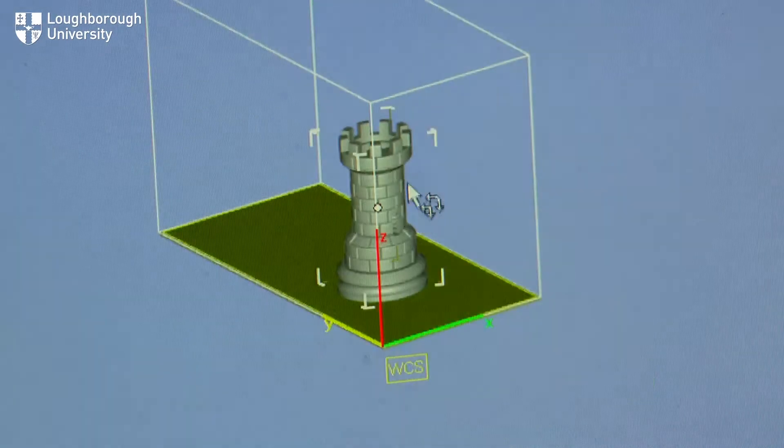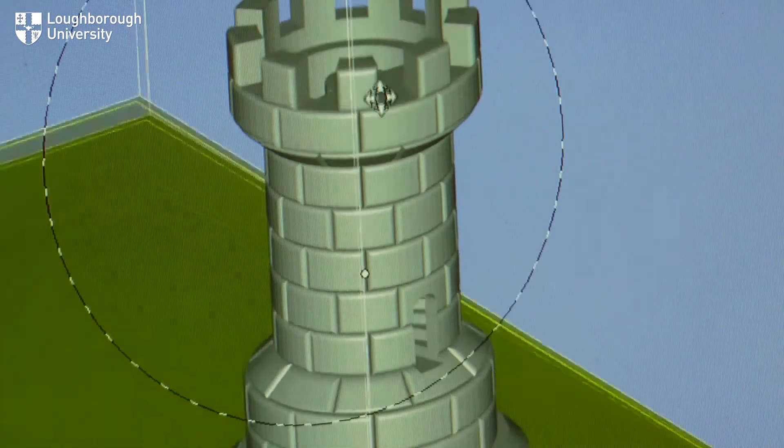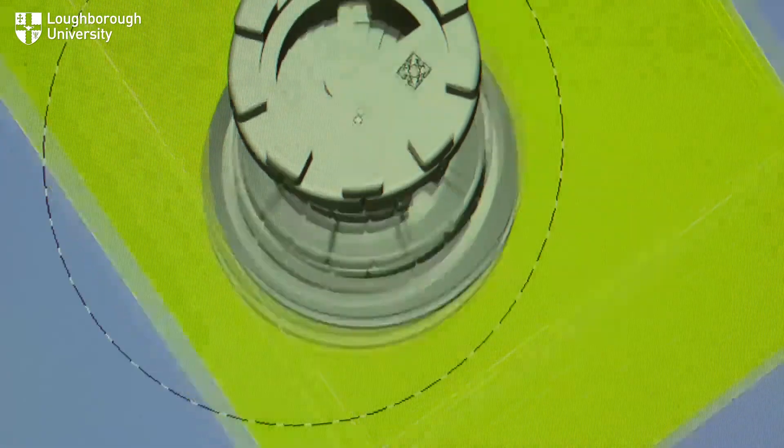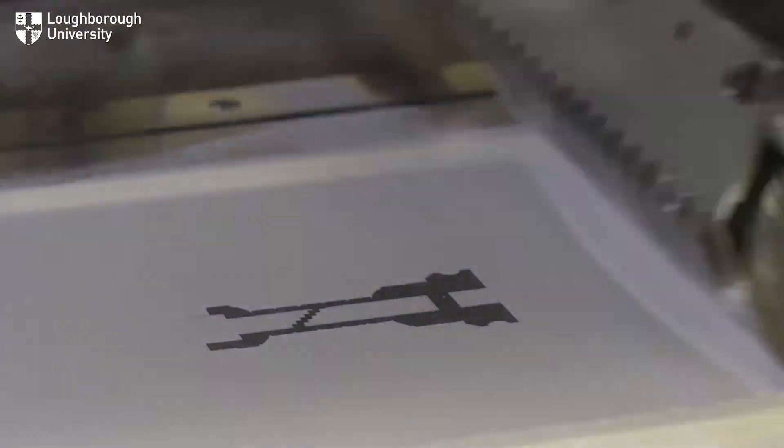First, the 3D computer model is sliced into thin layers and software pinpoints exactly where the part needs to be created. Next, the shape of each layer of the part is printed onto a bed of powdered plastic using heat-absorbing ink.